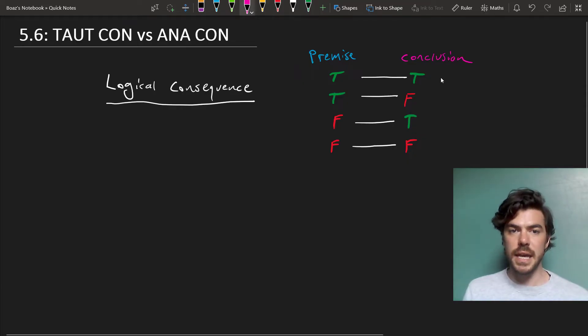Just to recap, we've already seen that in a valid logical consequence, if the premise is true, the conclusion has to be. So if we go from a true premise to a true conclusion, that's okay,